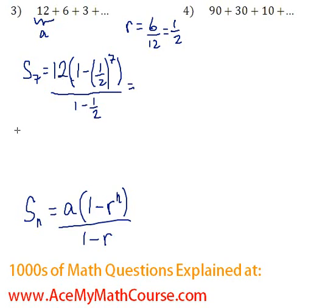Now over here we're going to get, so I have the 12 times 1 minus. Now half to the power of 7. 1 to the 7 is just 1. 2 to the power of 7 is 128 if I'm not mistaken. And 1 minus half is just half.